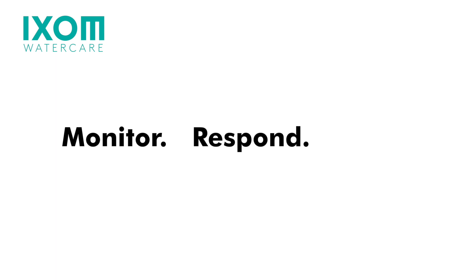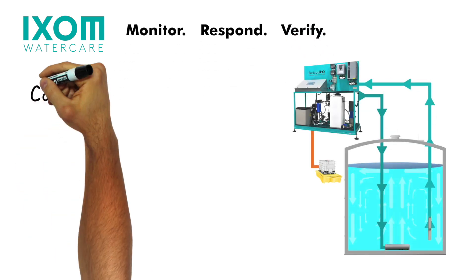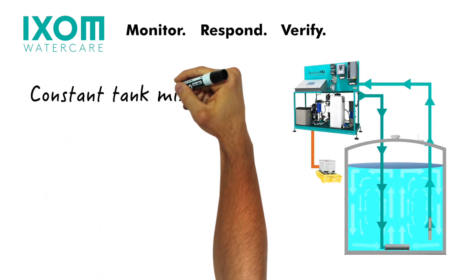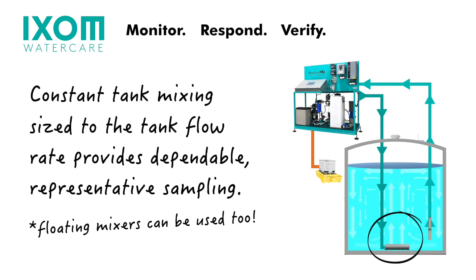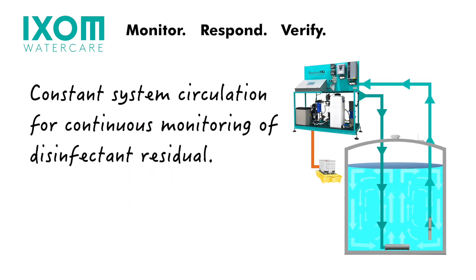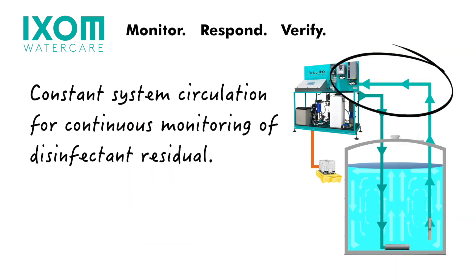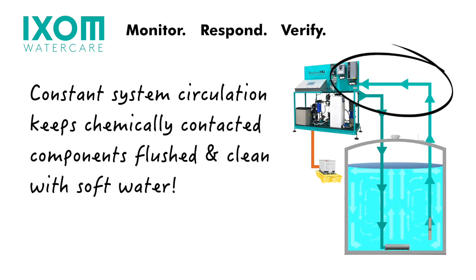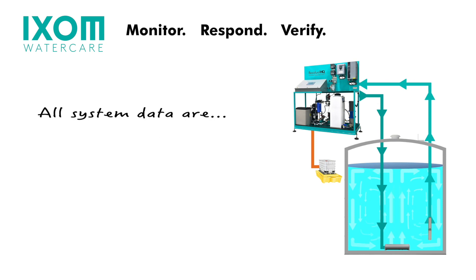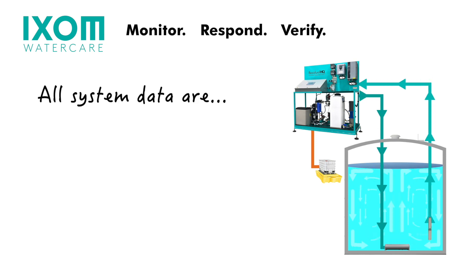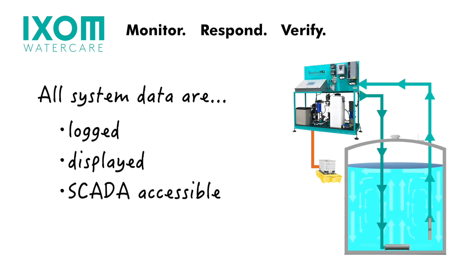Monitor. Respond. Verify. The Residual HQ combines constant sheet flow mixing in the tank to provide dependable and representative sampling, with constant system circulation for continuous real-time monitoring of the disinfectant residual. This constant circulation also keeps a majority of chemically-contacted components flushed and clean. Reagentless disinfectant residual sensors make it easy, and all system data are logged, displayed, and SCADA accessible.